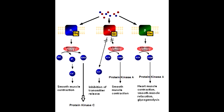What are all the receptors that use the G-protein class GQ? All the receptors that use the G-protein class GQ include H1 receptors, Alpha 1 receptors, V1 receptors, and M1 and M3.